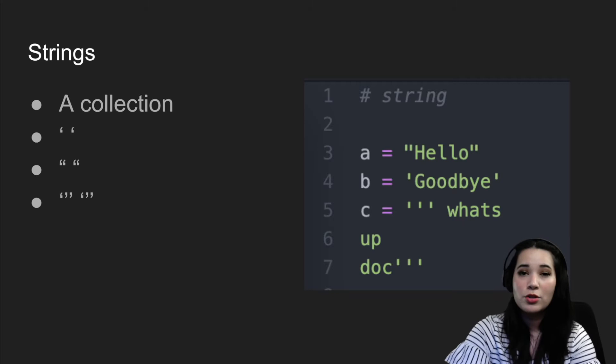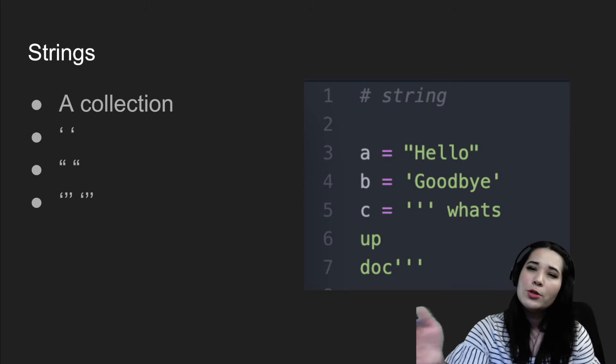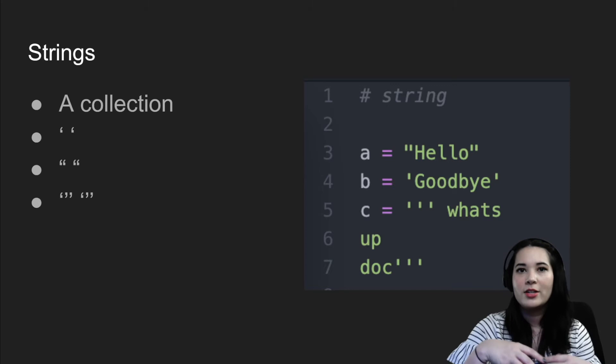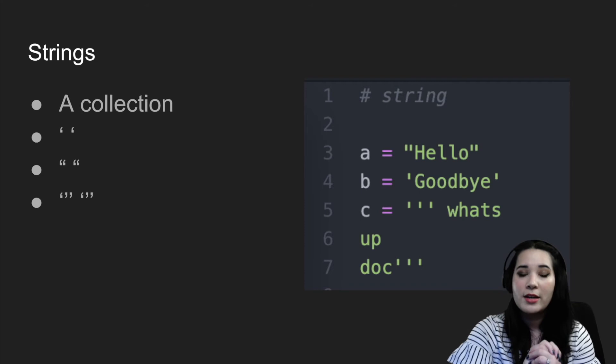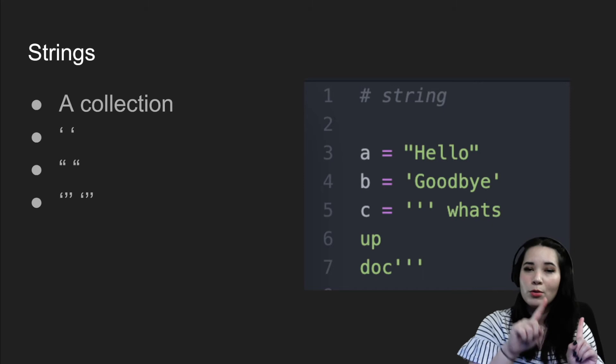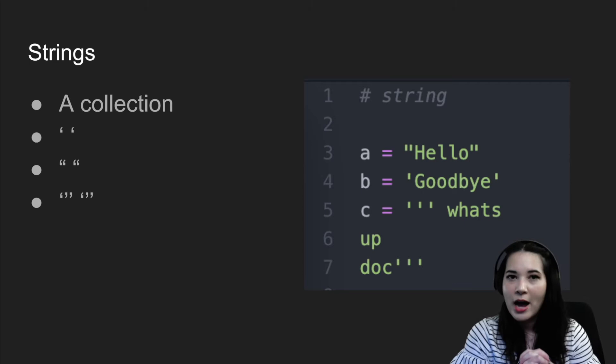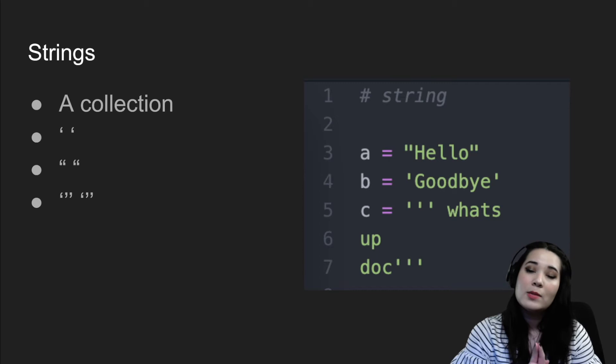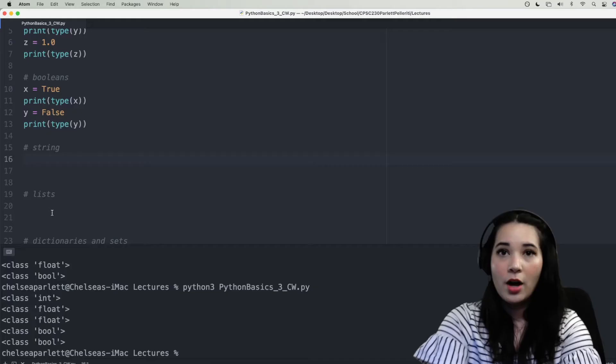Let's talk about strings. Strings are our first collection — a collection is multiple objects shoved into a single object together. A string is a collection of individual characters. There are three ways to declare a string: you can use one single quotation mark, double quotation marks, or three single quotation marks to open and close a string. The last one might look familiar from multi-line comments — that's because it is. If you ever have a string that needs multiple lines, open and close it with those three single quotes.